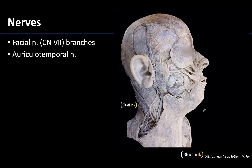Let's get our bearings in regards to this view and depth of dissection. We are looking at a lateral view — this is going to be anterior, this will be posterior. You can see that this is a relatively superficial dissection because the platysma muscle is present and you can see almost all of the parotid gland. We're really going to focus on this parotid gland region to find some of the nerves.